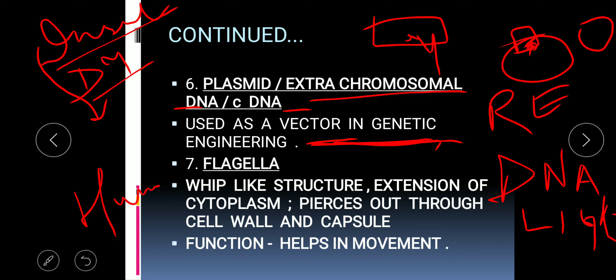This is how plasmid is very useful for genetic engineering. Because plasmid doesn't take part in bacterial cell division and its control, this extrachromosomal DNA is used as a vector in genetic engineering.